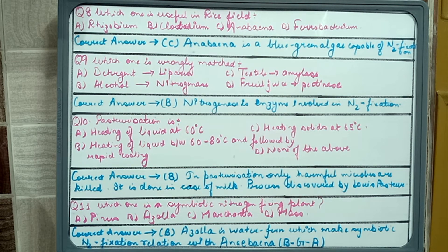Question number eight: which one is useful in rice field? Rhizobium, Clostridium, Anabaena, or Azotobacter. The correct answer would be Anabaena. Why? Because Clostridium is a bacteria so this option is discarded. Rhizobium is a symbiotic nitrogen fixing bacteria but it does symbiotic association with the roots of leguminous plants.